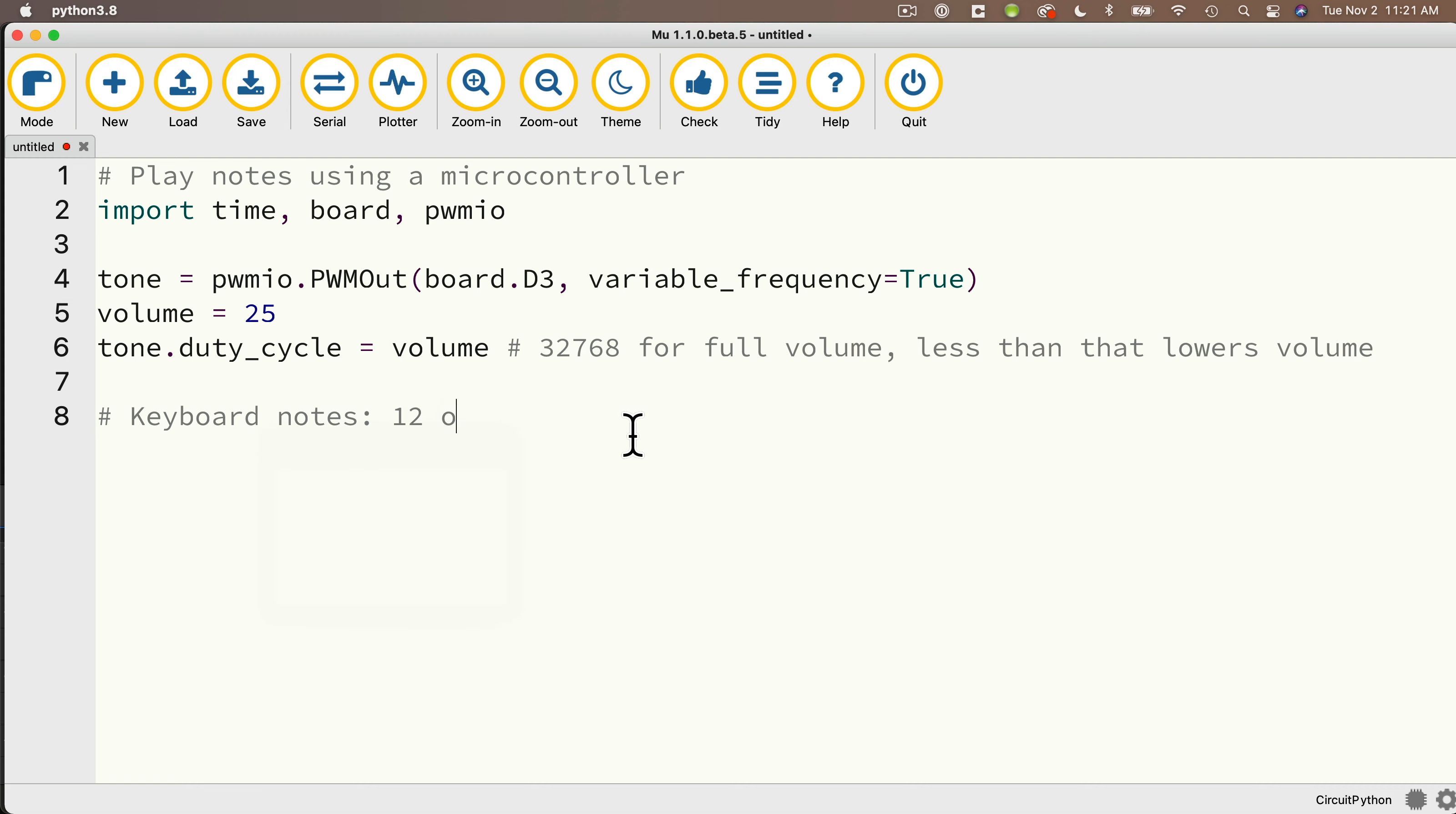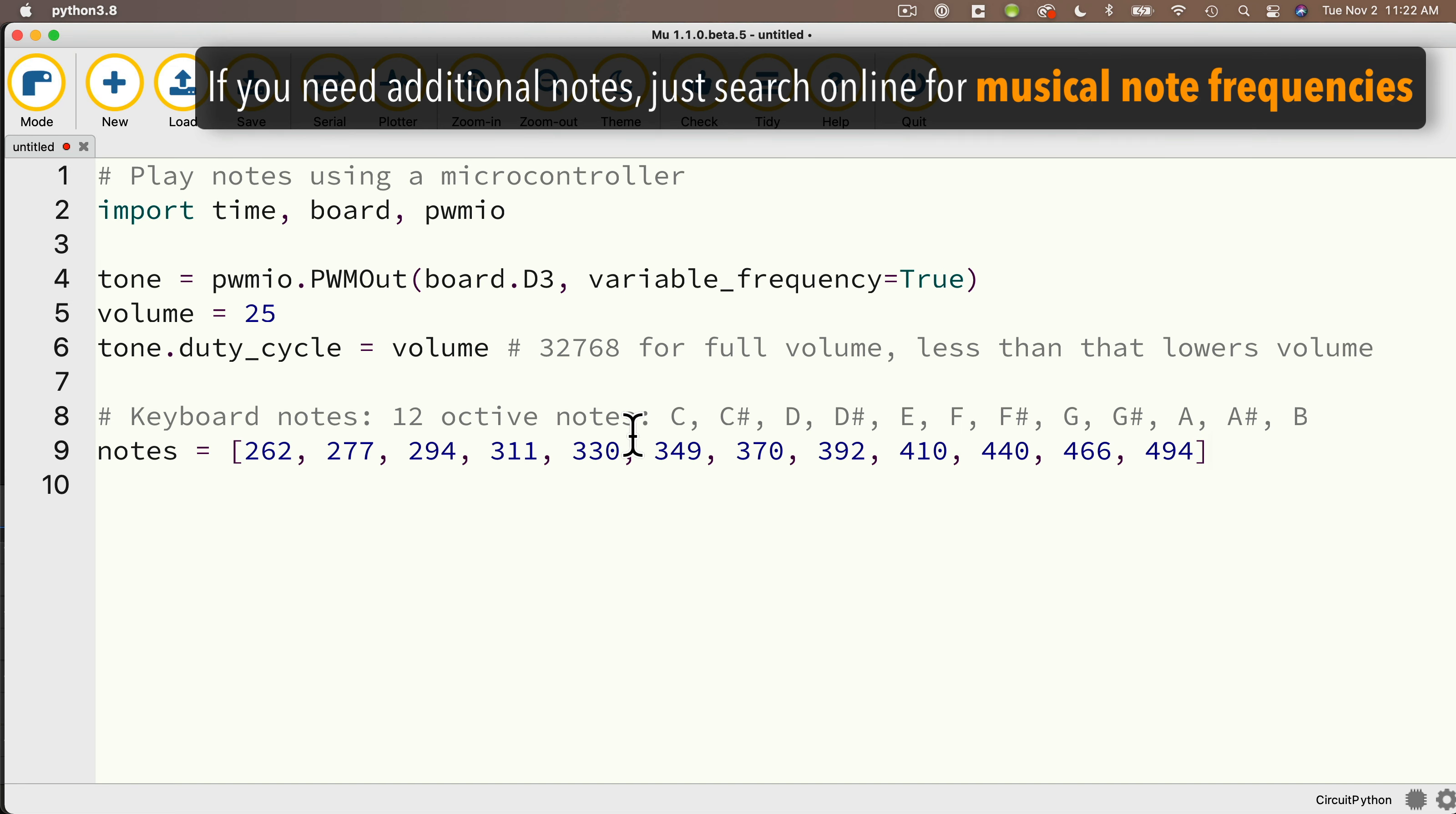And just as a note, 32,768 is full volume and anything less than that lowers the volume. Then we'll set up the keyboard notes - the 12 octave notes from C, C sharp, D, D sharp, E, F, F sharp, G, G sharp, A, A sharp, and B. We're going to create a list called notes and set that equal to in square brackets 262, comma 277, comma 294, comma 311, comma 330, comma 349, comma 370, comma 392, comma 410, comma 440, comma 466, comma 494. Make sure you've got 12 values in there and those numbers are all correct.